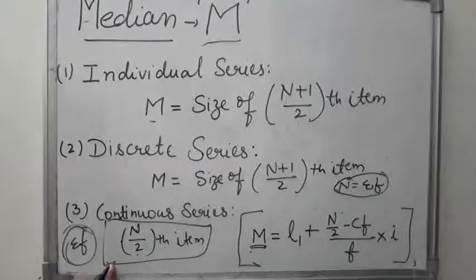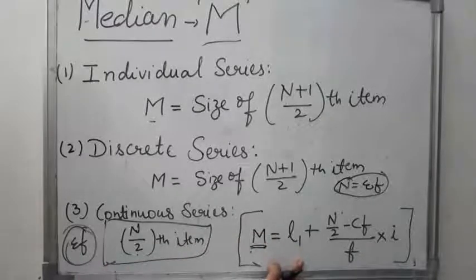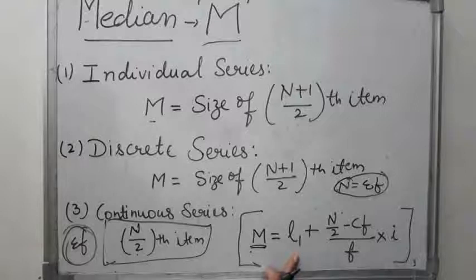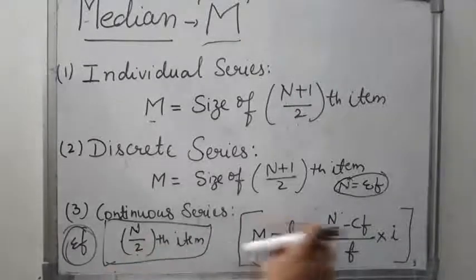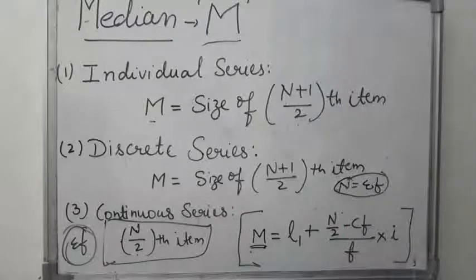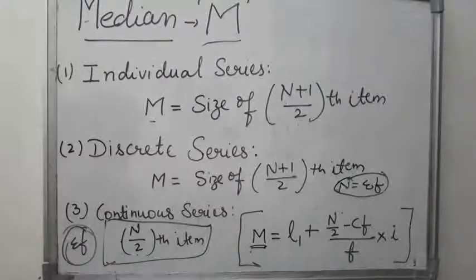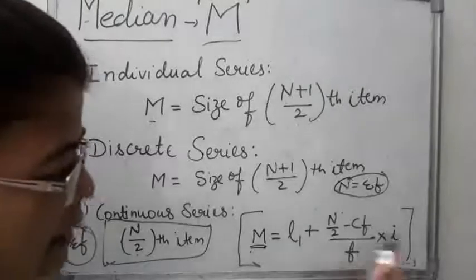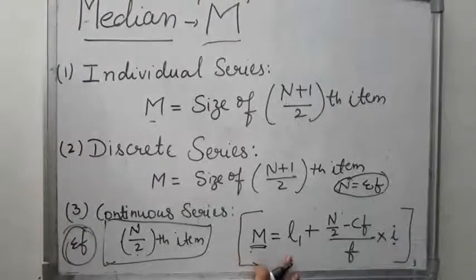After getting the median class interval, we apply values in the formula: M = L1 + [(N/2 − cf) / f] × i. Here, L1 is the lower limit of the median class interval, cf is the cumulative frequency of the class preceding the median class, f is the frequency of the median class, and i is the size of the class interval.